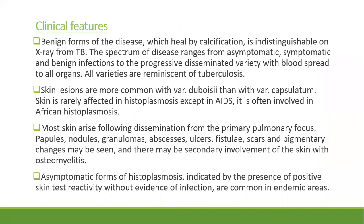The benign form of the disease, which heals by calcification, is indistinguishable on X-ray from tuberculosis. The spectrum of disease ranges from asymptomatic and benign infections to progressive disseminated variety with blood spread to all organs — all varieties are reminiscent of tuberculosis. Skin lesions are more often seen with the duboisii than with capsulatum form, and skin is rarely affected in histoplasmosis except in AIDS. Most skin lesions arise following dissemination from the primary pulmonary focus and include papules, nodules, brain-low mass, abscesses, ulceration, fistula, scars, and pigmentary changes. There may also be secondary involvement of skin with osteomyelitis.